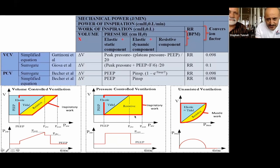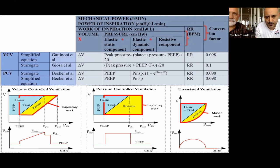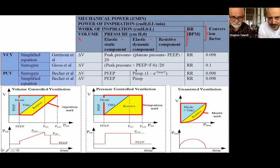Smarter people like Gattinoni and Basher made equations to calculate it — each has its own problems and many modifications. Simply put: it's volume multiplied by pressure, with components being elastic-static (PEEP pressure), elastic-dynamic, and resistive. So it's volume times pressure times respiratory rate times the conversion factor.